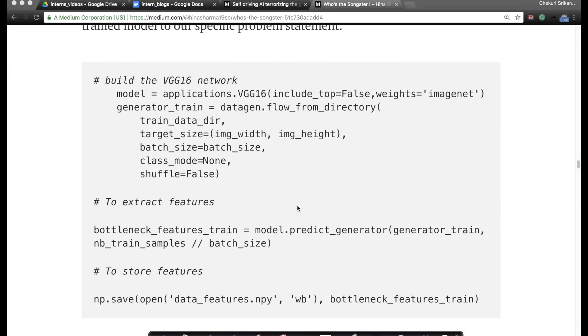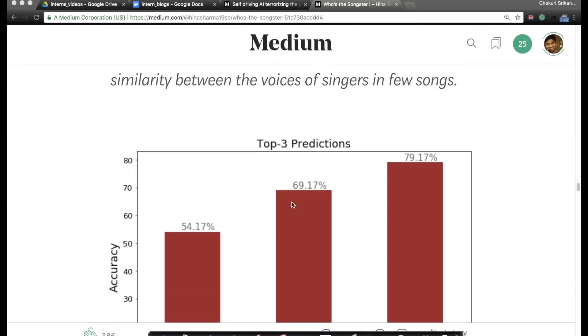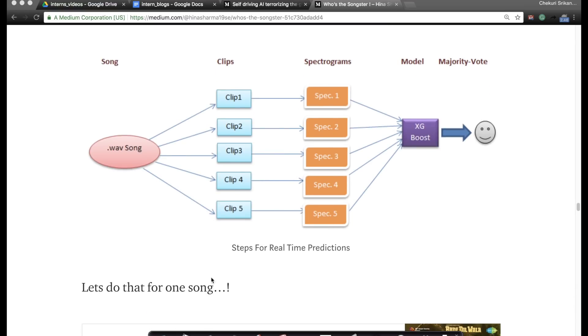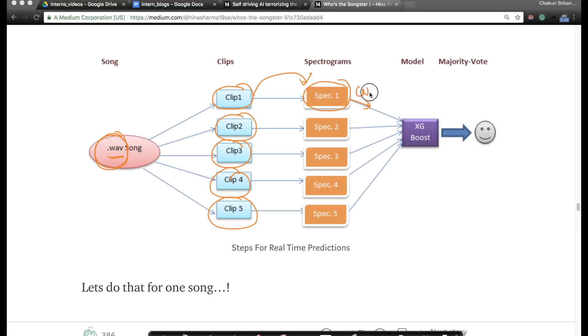Her overall architecture looks like this: given a song in .wav format (if you have mp3 you can convert to .wav), she takes small clips or snippets. On each of these snippets she computes a spectrogram, and from each spectrogram she gets features using CNN, using VGG16. She pumps these features into an XGBoost model, and then there is a majority vote that happens.